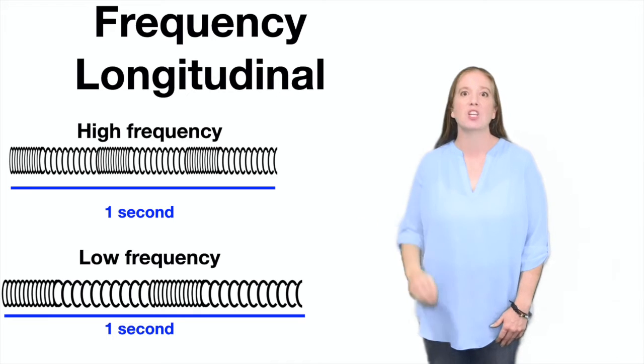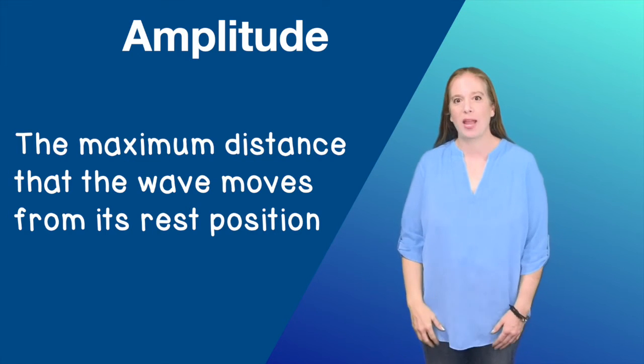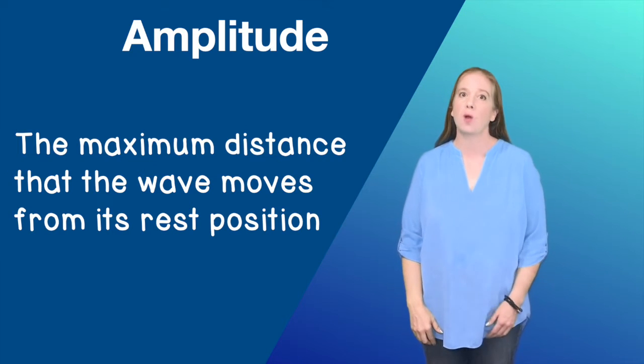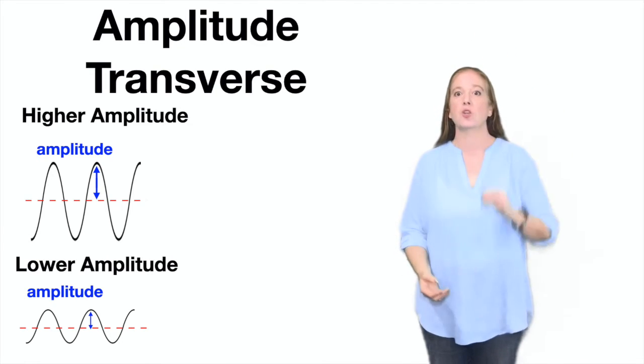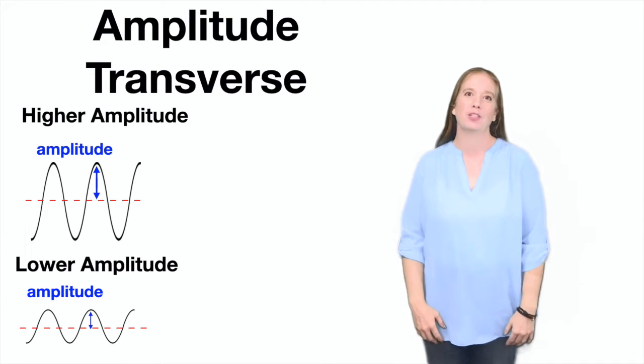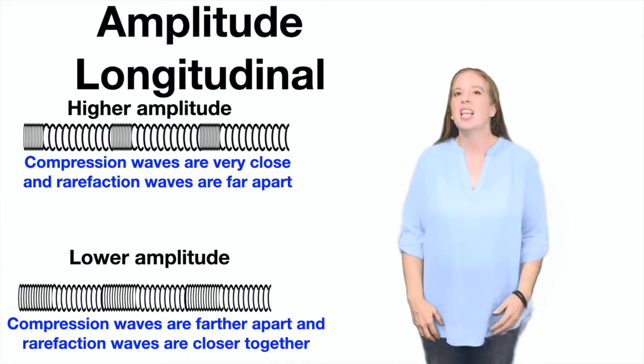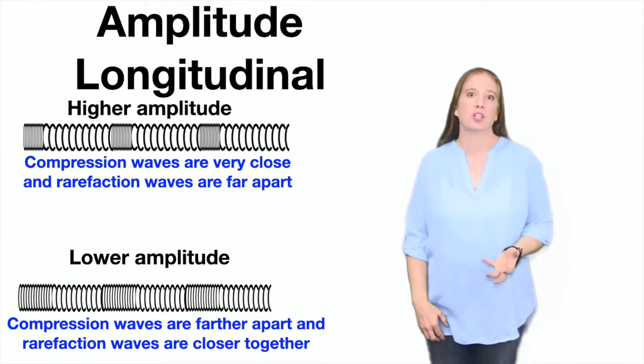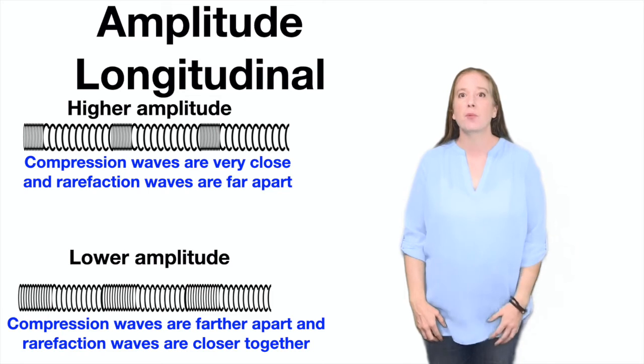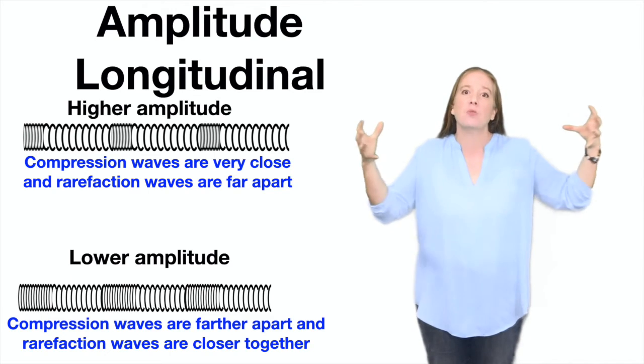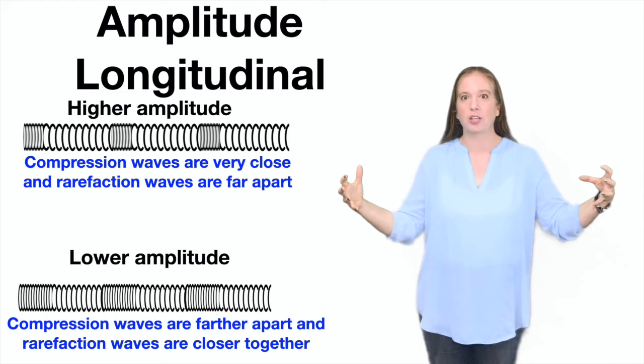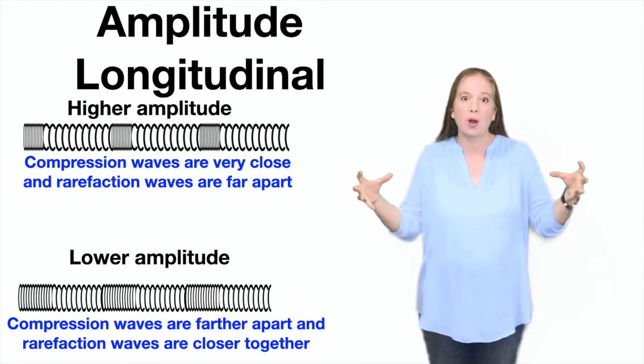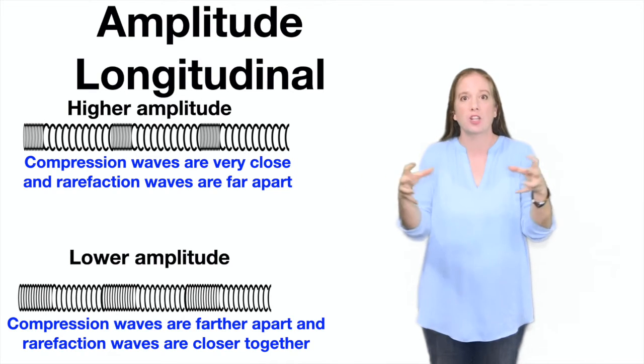The amplitude of a wave is the maximum distance the wave moves from its rest position. The greater the distance from the resting position to the crest, the greater the amplitude for a transverse wave. Longitudinal waves are a little bit trickier. In a higher amplitude longitudinal wave, the compression waves are very close and the rarefaction waves are very far apart. In a lower amplitude longitudinal wave, the compression waves are farther apart and the rarefaction waves are actually closer together.